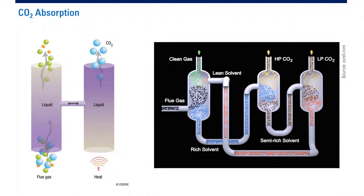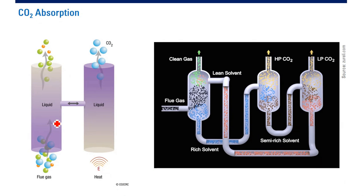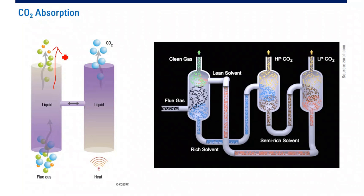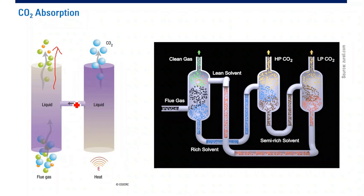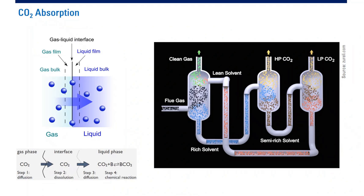For absorption, you capture the CO2 using a liquid solvent. The flue gas enters the absorber column, and the clean gas exits from the top. The CO2 is captured and then released in another column. That is the basic absorption phenomenon.